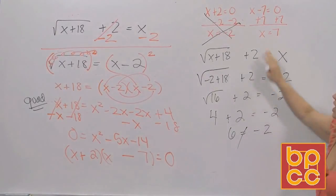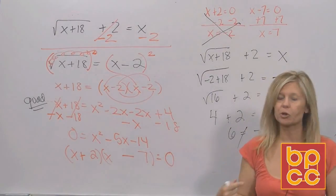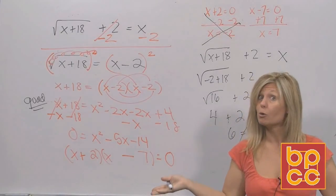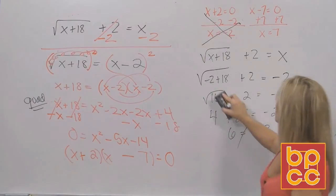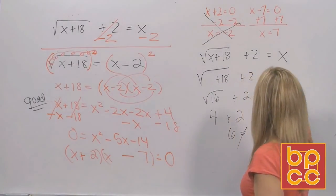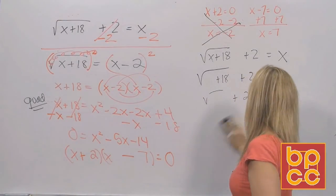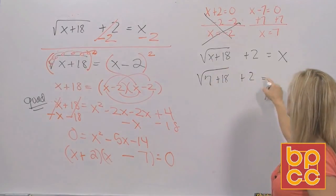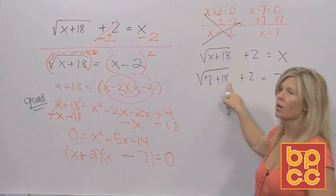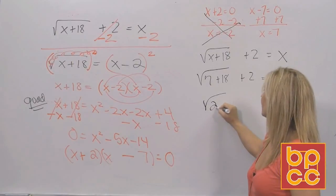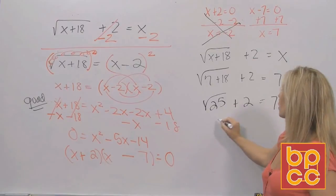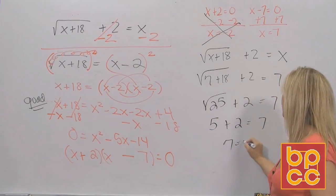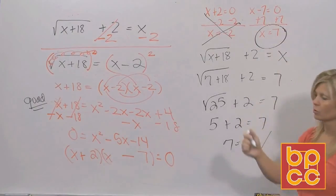Don't assume they're both going to check — they both could be thrown in the garbage, giving no solution. Check x equals 7: square root of 7 plus 18 plus 2 equals 7. 7 plus 18 is 25; square root of 25 is 5; 5 plus 2 is 7. Does 7 equal 7? Yes — that checks. There's your solution.